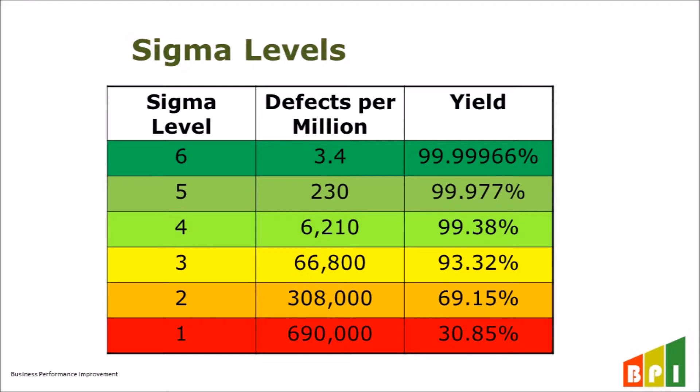The higher the Sigma level, the less chance of a failure in the process, which reduces waste, inefficiency, and ultimately rework cost in the process, which directly impacts the financial performance of a company. The goal of Six Sigma is to calculate the Sigma level for your key processes and strive to increase the Sigma level in order to improve the financial performance of the company.